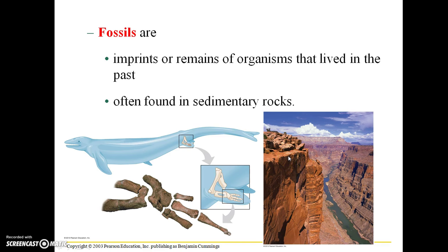The fossil record is a very robust line of evidence in support of evolution. We see gradual change in some species, and we also see some species disappearing from the fossil record altogether — certain species have gone extinct, such as the dinosaurs and the megafauna of North America like saber-toothed cats and woolly mammoths. These animals disappeared due to a changing environment, and some believe also due to early human hunters taking advantage of naive animal populations that were relatively easy to hunt.